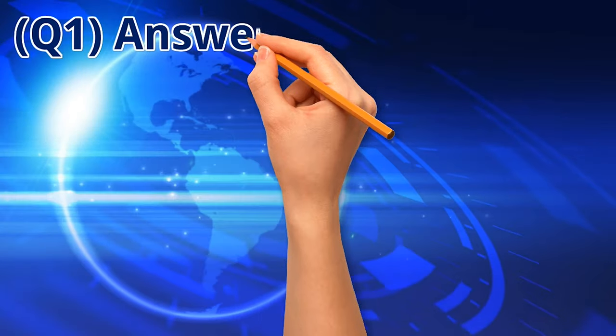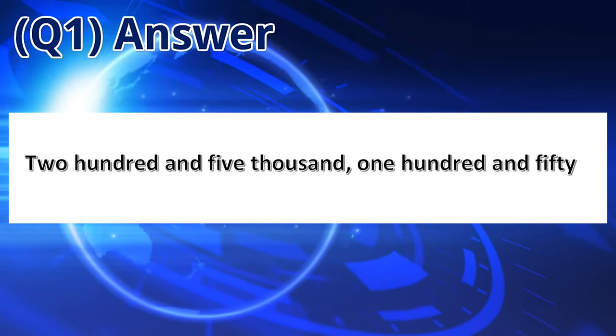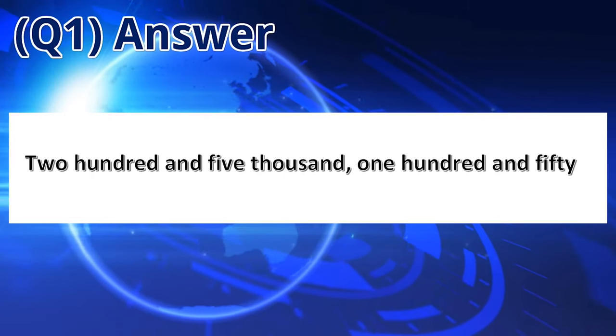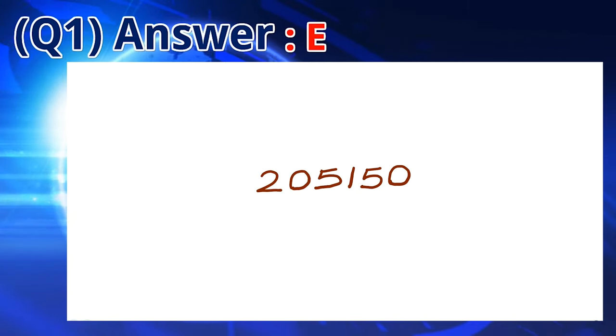The number 205,150 can be written as 2, 0, 5, 1, 5, and 0. So the answer is E.